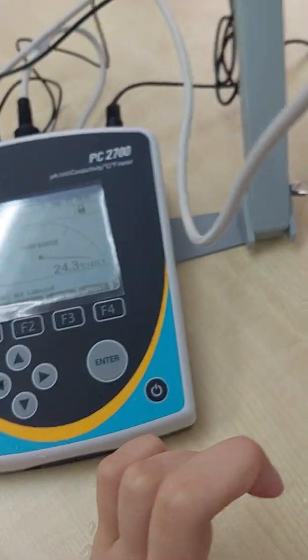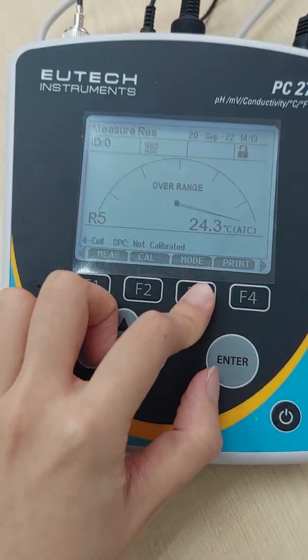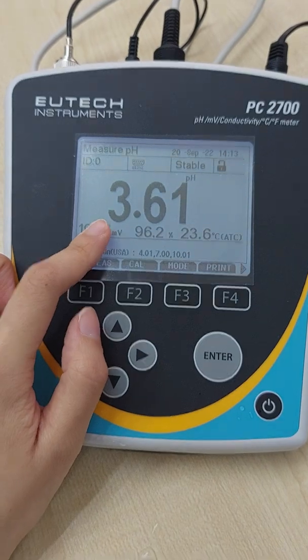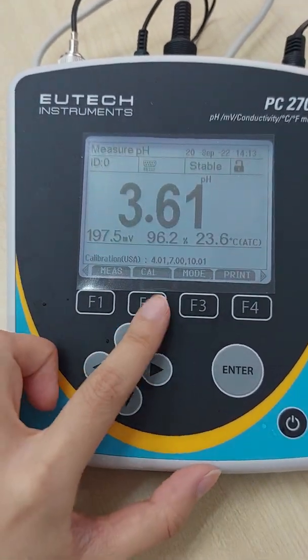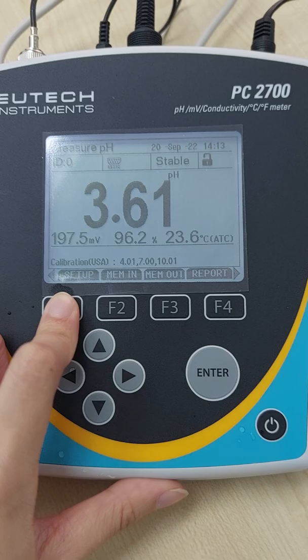Resistivity also uses the same probe. It is the opposite of conductivity. And then back to pH. Now we'll go to the setting, setup.